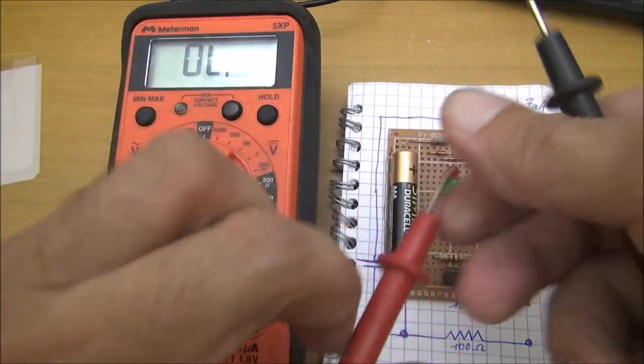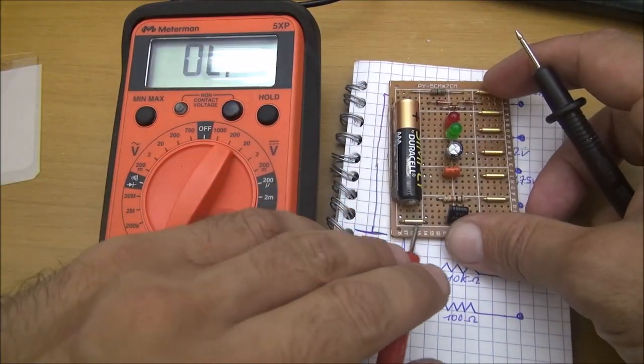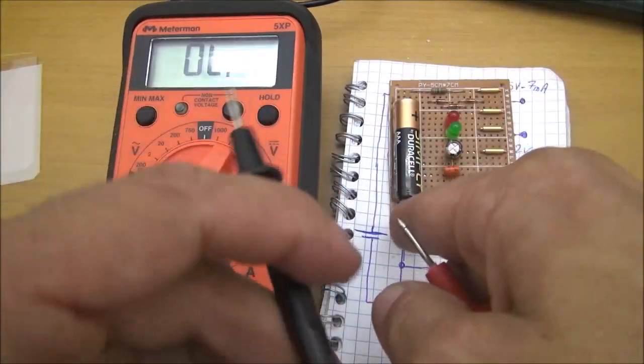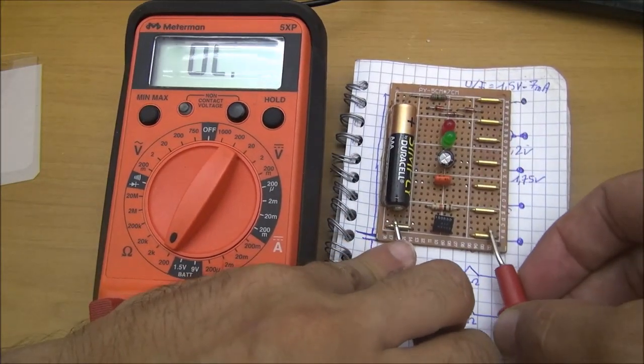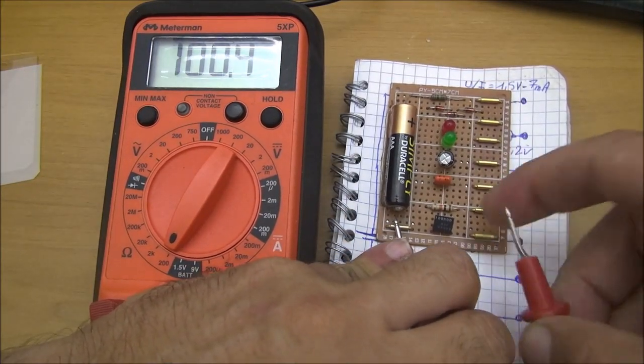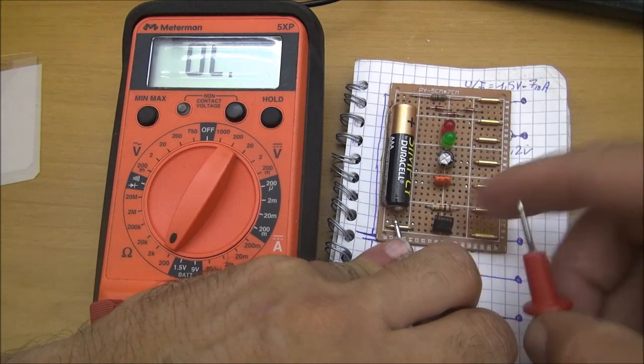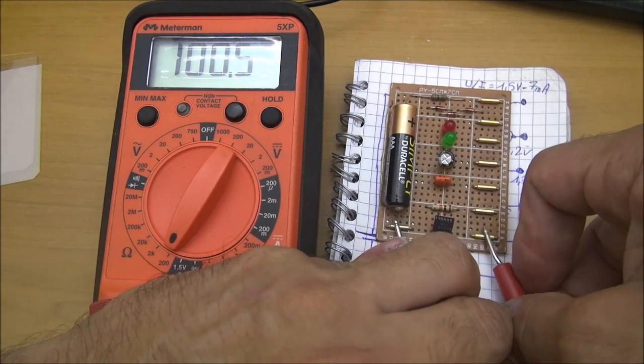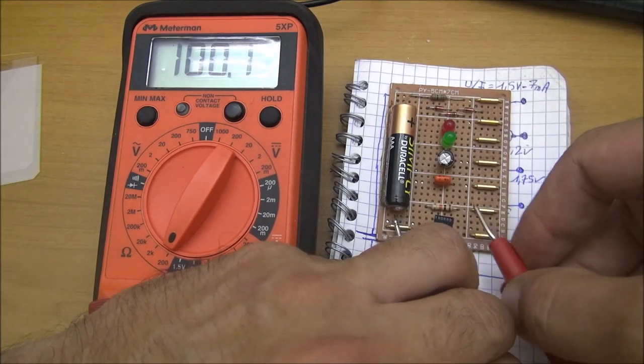Begin to check your components. You put the negative here on the common point and check your resistor. This is a precision resistor here and you can see the multimeter shows 100 ohms.